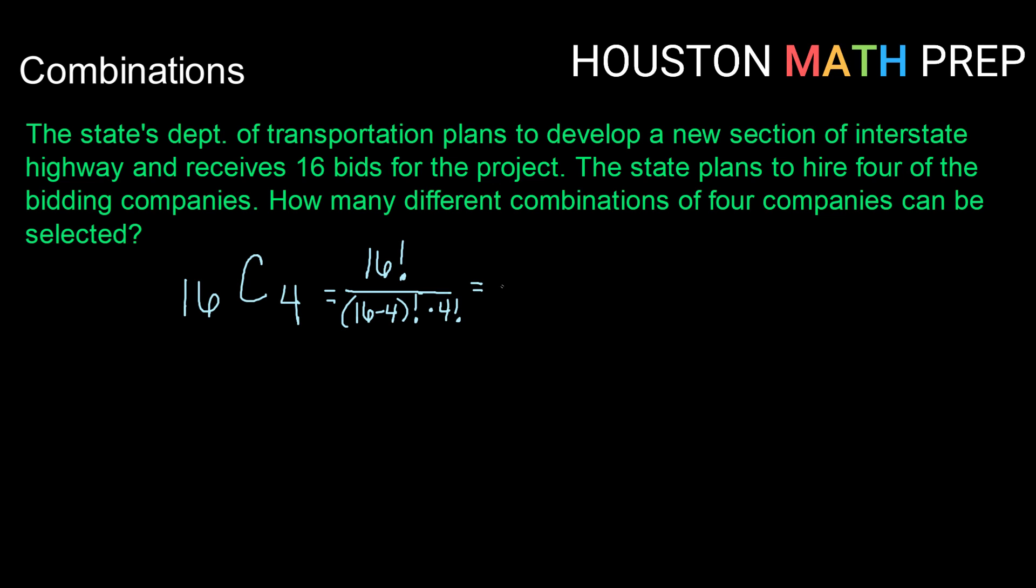So if we were to write that out or simplify that once, that would be 16 factorial divided by 12 factorial times 4 factorial. So that can be written as 16 times 15 times 14 times 13 times 12 and everything below it.